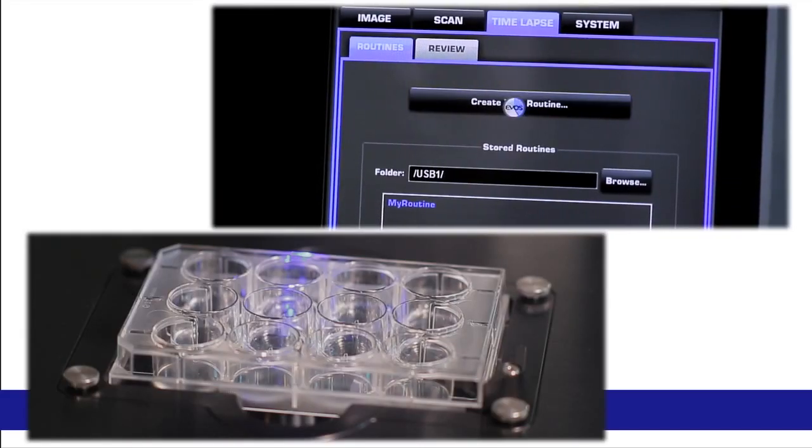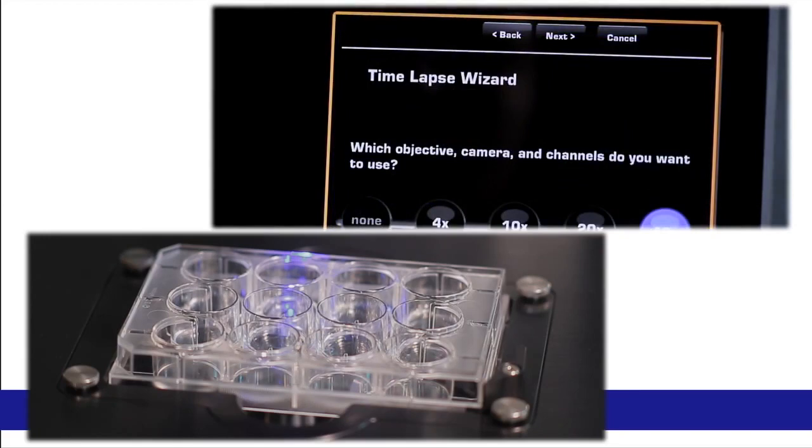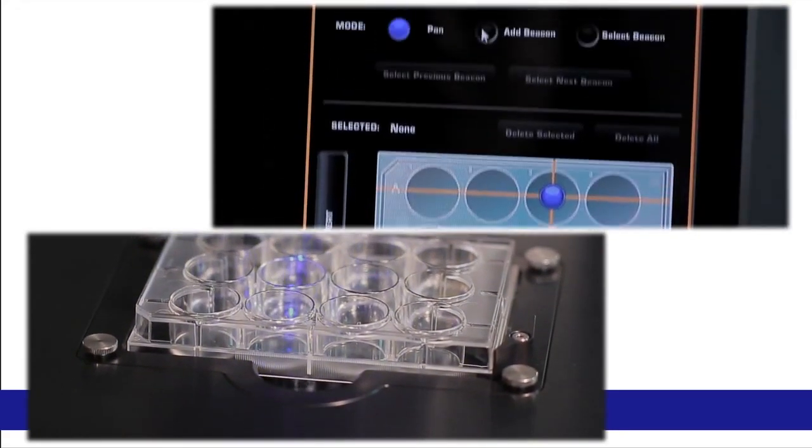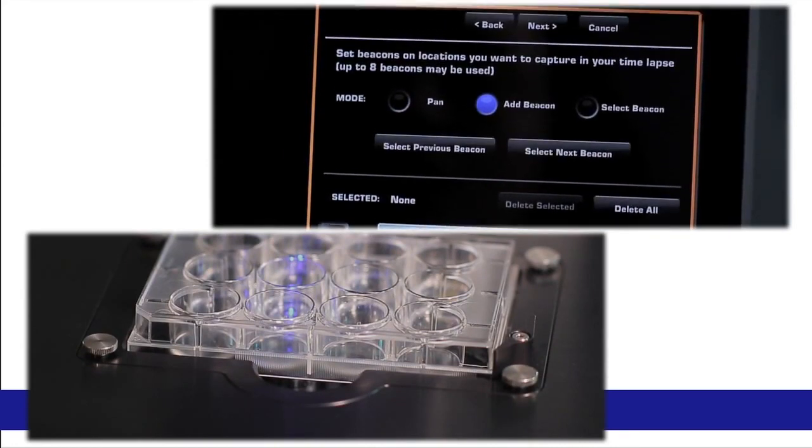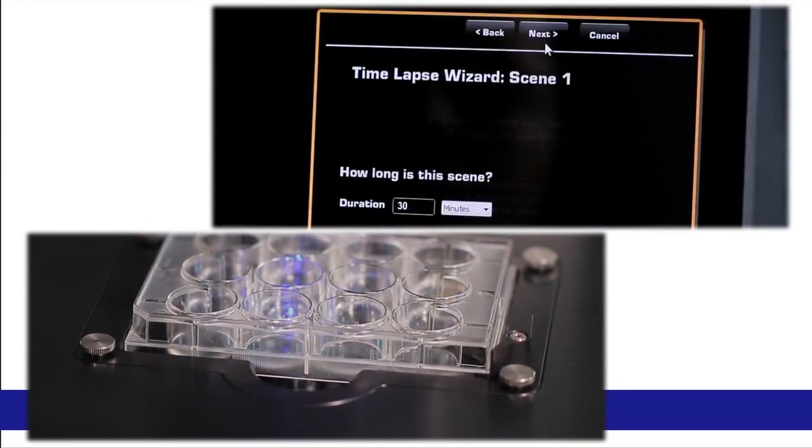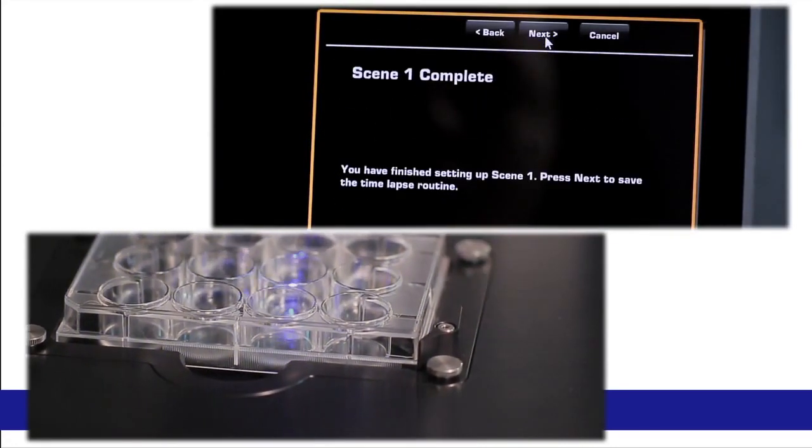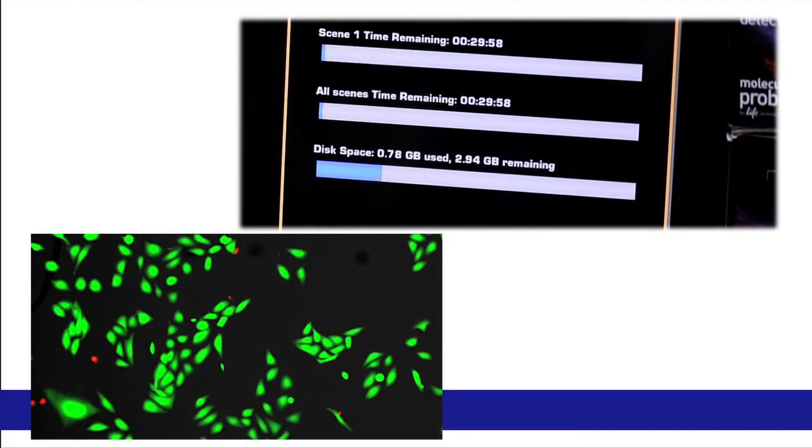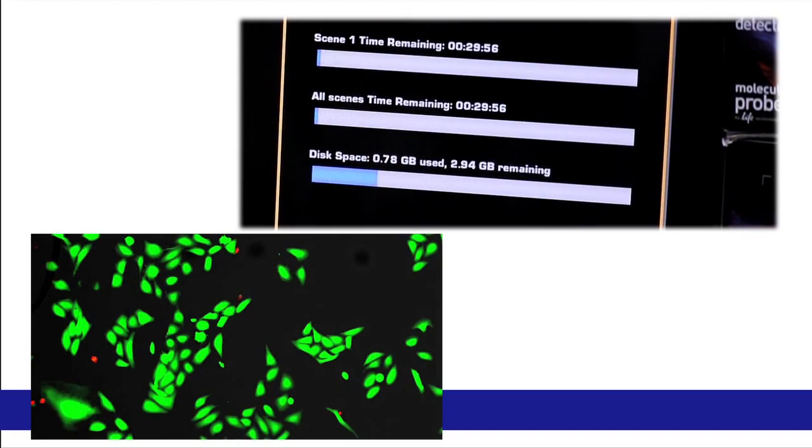The EVOS FL Auto cell imaging system minimizes the time and effort needed to collect time-lapse images. The automated system will even allow you to simultaneously capture time-lapse images at multiple positions on a plate or dish. After collecting time-lapse images, the EVOS FL Auto will automatically create a movie file for viewing the results.